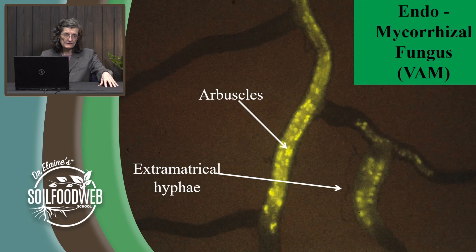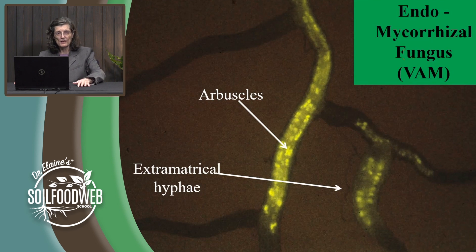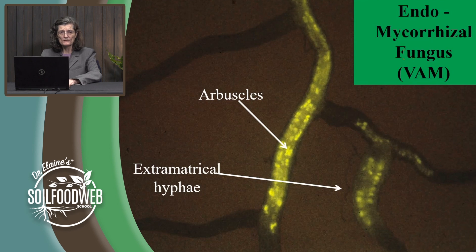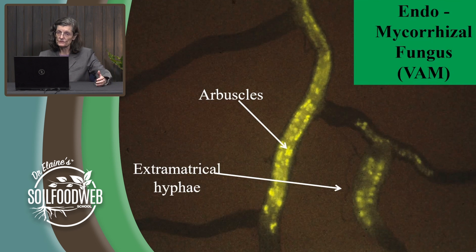Ectomycorrhizal fungi colonize the root systems of evergreens and conifers. Endomycorrhizal fungi colonize everything from deciduous trees and shrubs through highly productive grasses, tomatoes, solanaceae, onions, and garlics — most of our vegetable materials require mycorrhizal colonization. But there's a set of plant species that should not become colonized by mycorrhizal fungi: the cole and kale crops — things like broccoli, cauliflower, and mustards. As long as you're paying attention, you can make sure your low-growing ground cover has the right kind of mycorrhizal fungus in the soil.